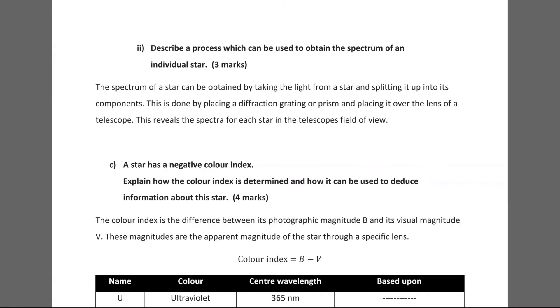So the spectrum of a star can be obtained by taking the light from the star and splitting it up into its components. This is done by placing a diffraction grating or prism and placing it over the lens of a telescope. This reveals the spectra of each star in the telescope's field of view. So I think that outlines it pretty explicitly. So you just have something such as a diffraction grating or prism which can break up the light into its individual components. And you just whack that in front of the lens for a telescope. And that's all you need to do. And that will take the spectra of the stars that you're observing or in the telescope's field of view, and it will break that up to make it visible.